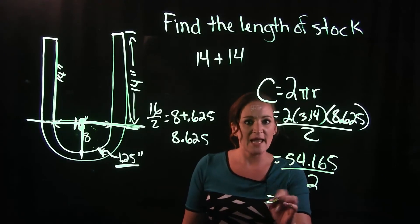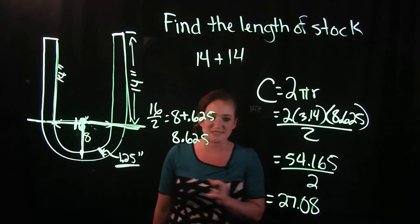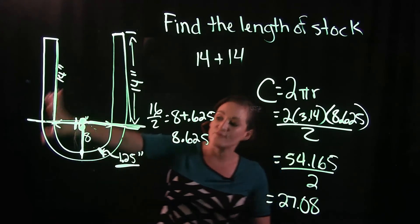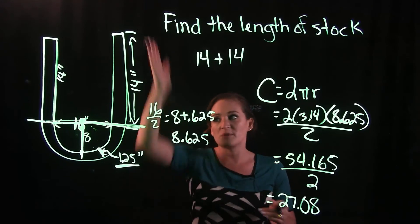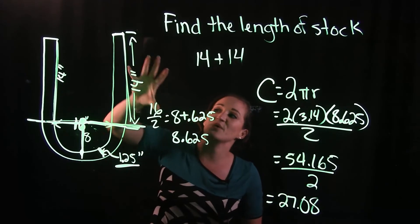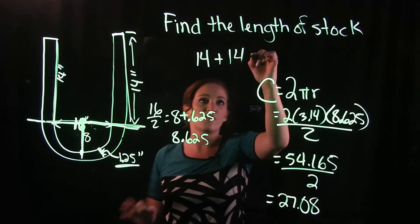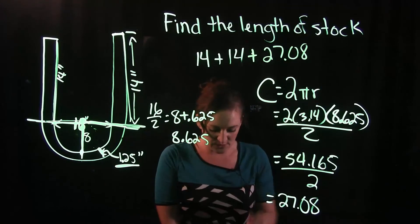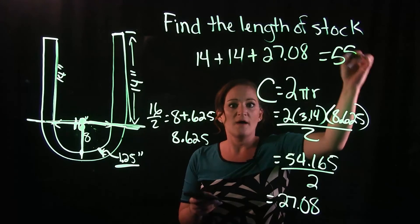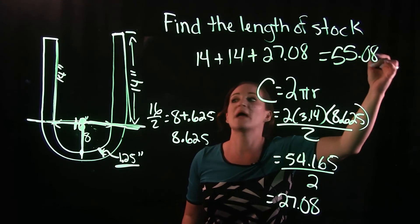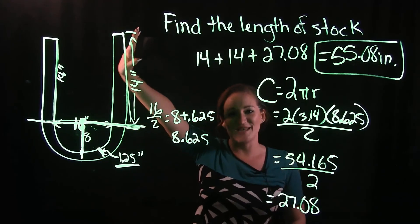Now that is the circumference of this semicircle here. We need to remember we are finding the perimeter of this entire piece, so we can't forget that we have these two pieces of 14. So we have 14 plus 14 plus 27.08. That is going to give us a grand total of 55.08 inches as the length of the stock that we would need for this.